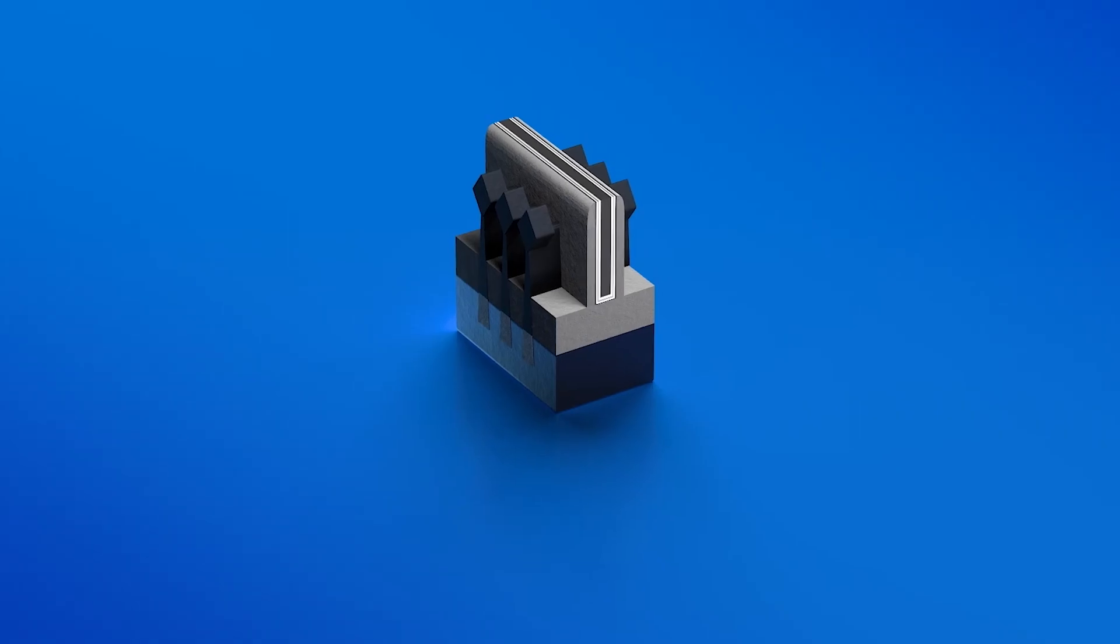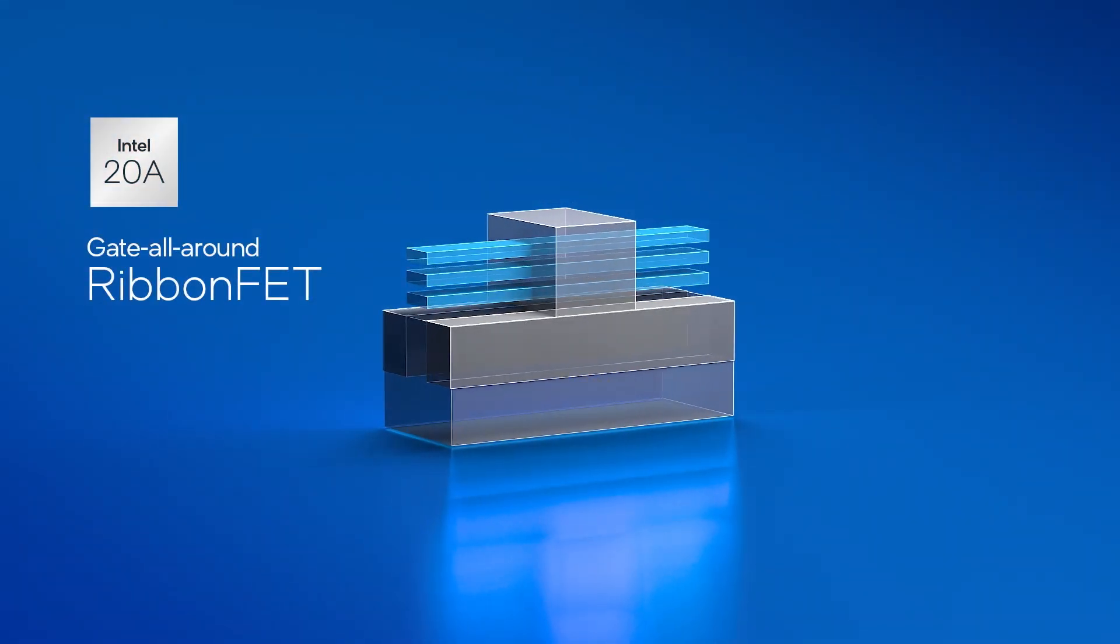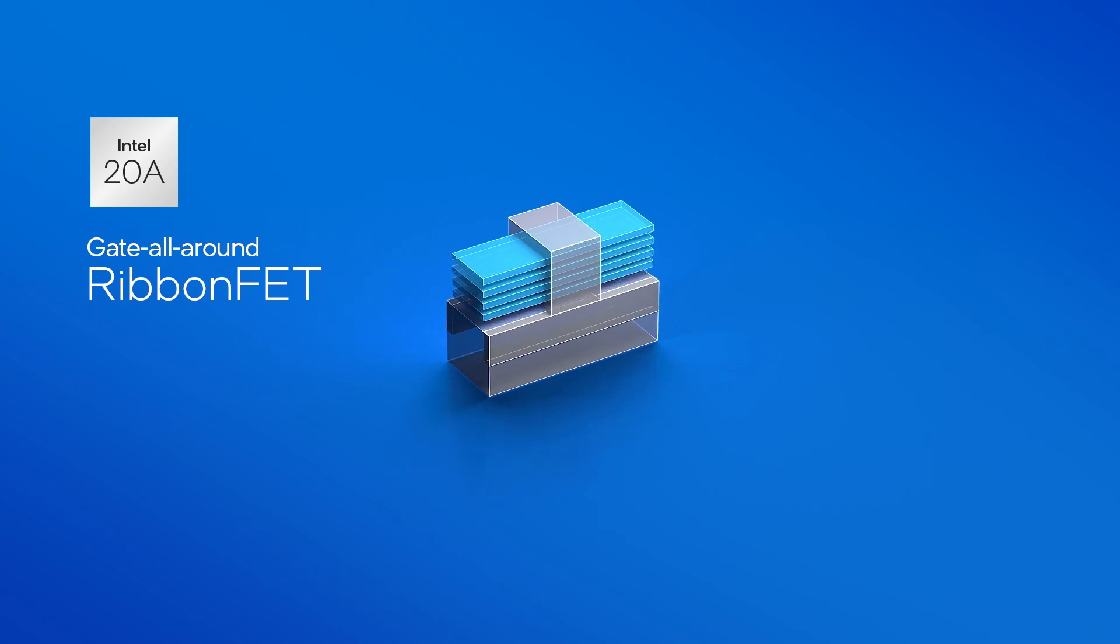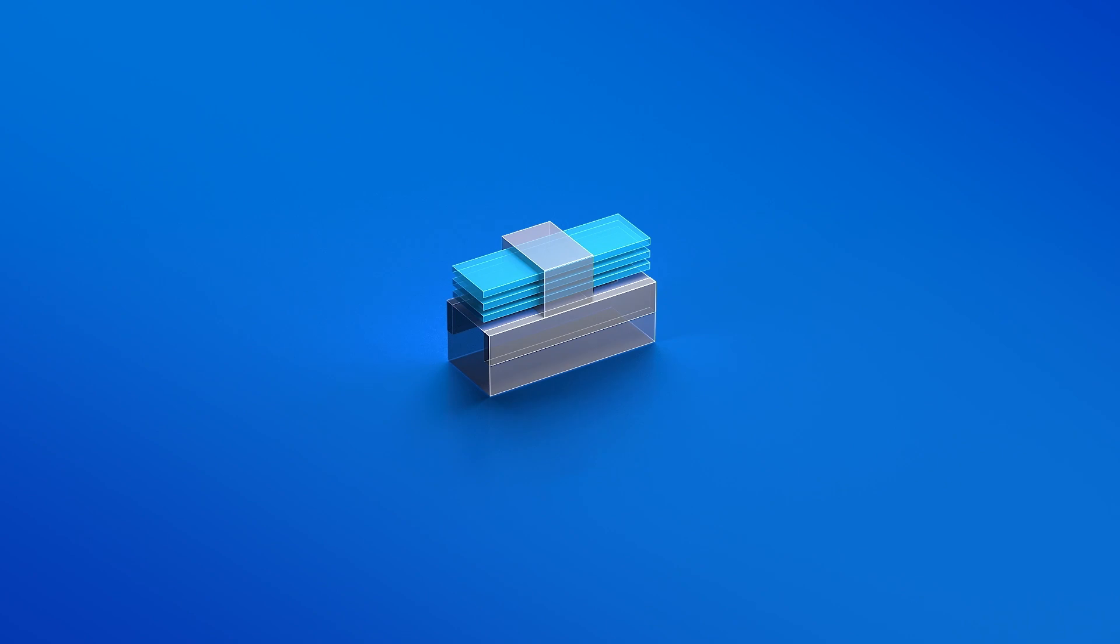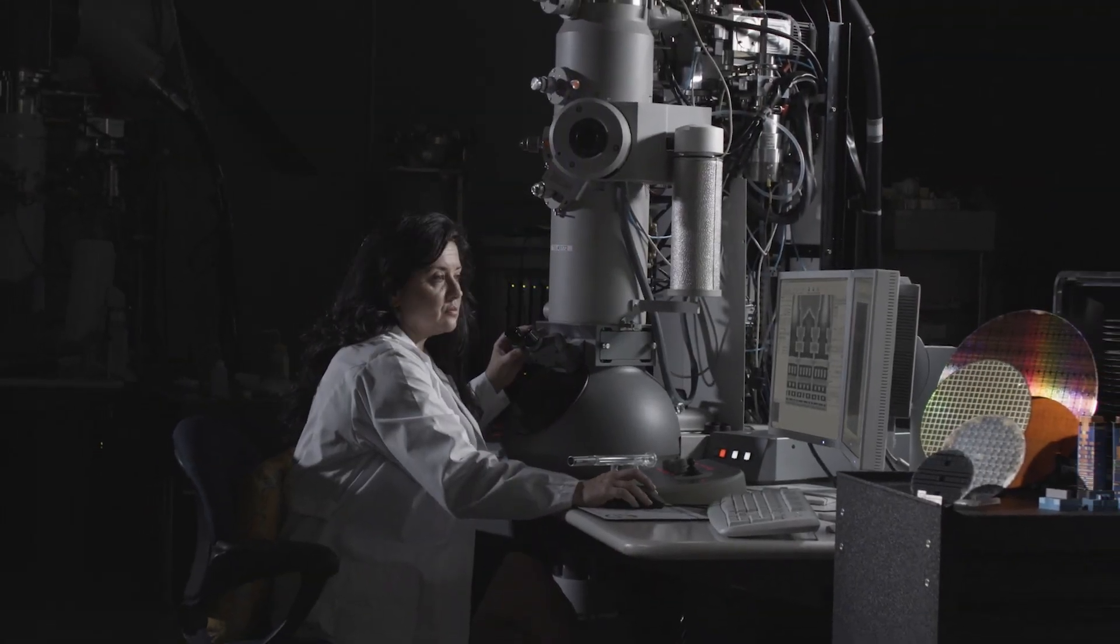The insatiable demand for ever smaller transistors requires new technological marvels. New printing techniques like extreme ultraviolet lithography, entirely new structures and new materials are being deployed to meet this need. That's the exciting story of the innovation of the transistor. A story of scale, a story of magic, and a story we're still writing here at Intel.